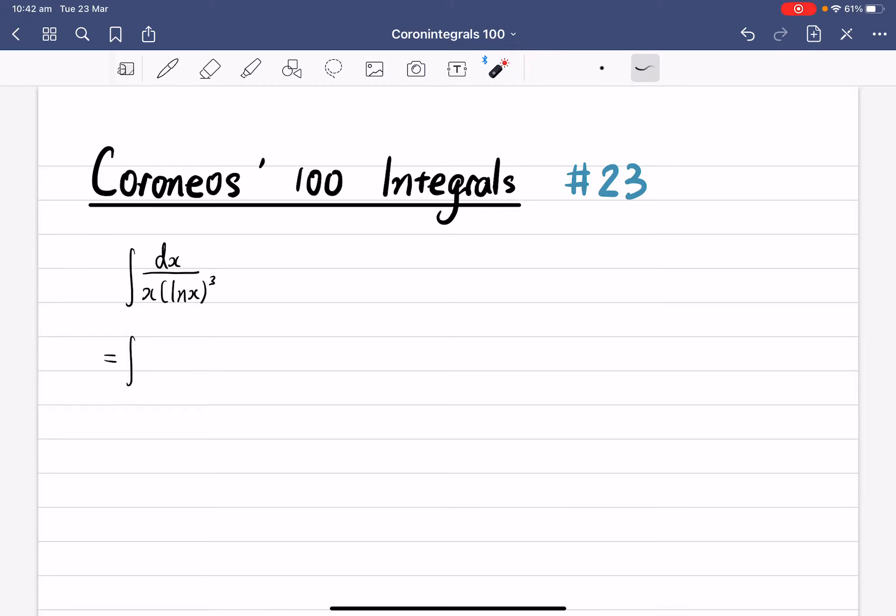So the first step you do is, if you think about the derivative of lnx, the derivative of lnx is equal to 1 over x. And as you can see, we do have 1 over x here, so therefore we can use the reverse chain rule.